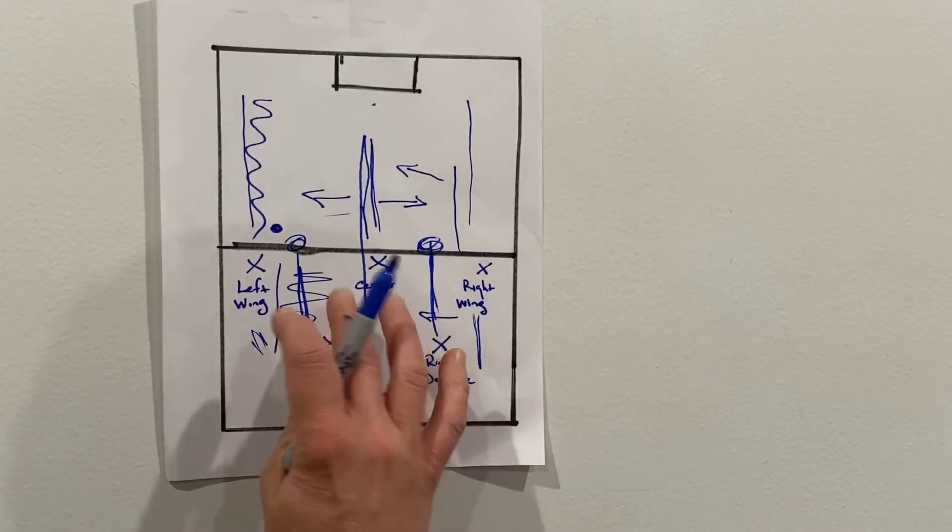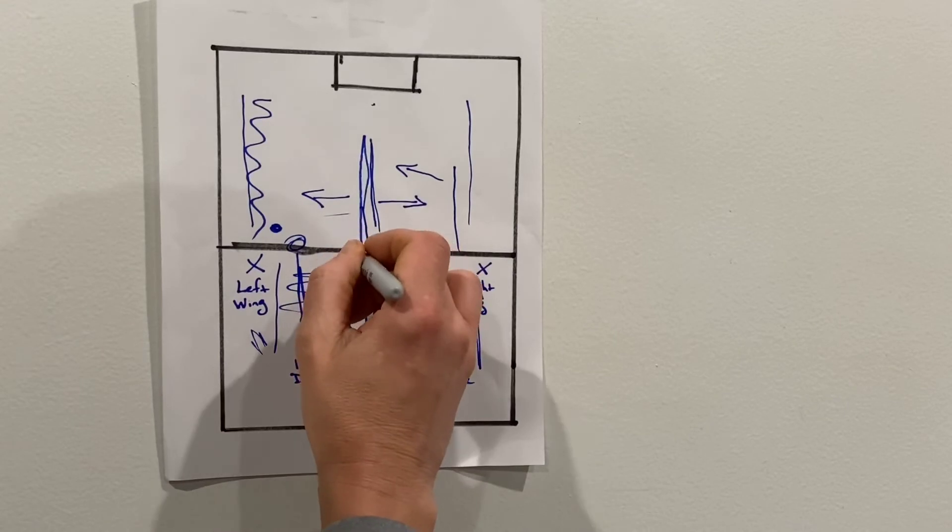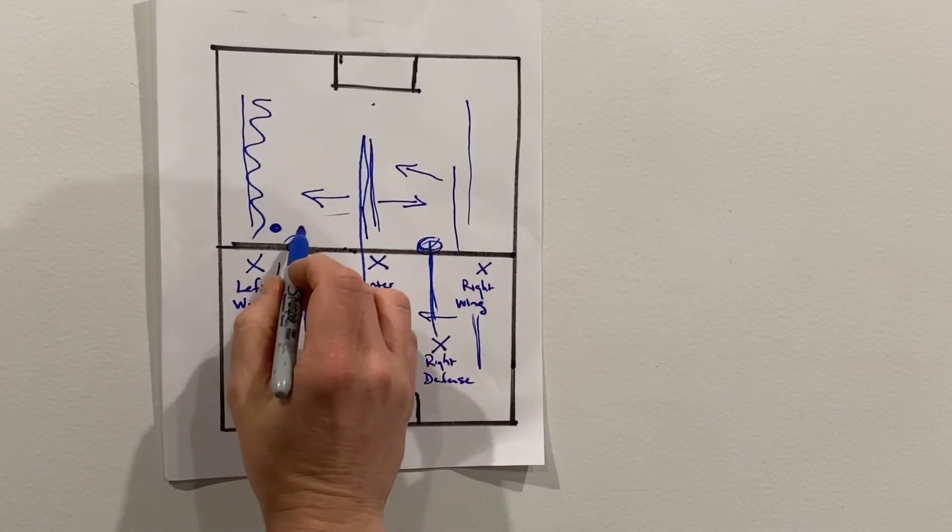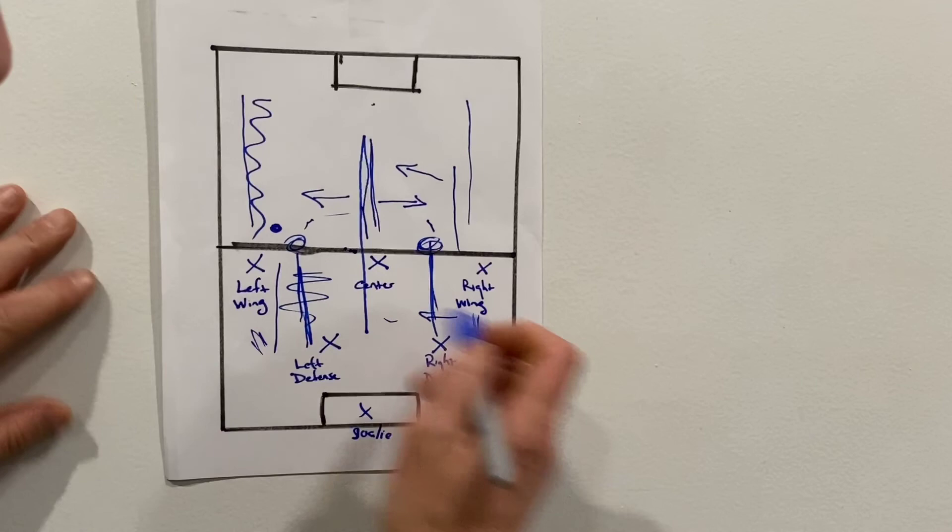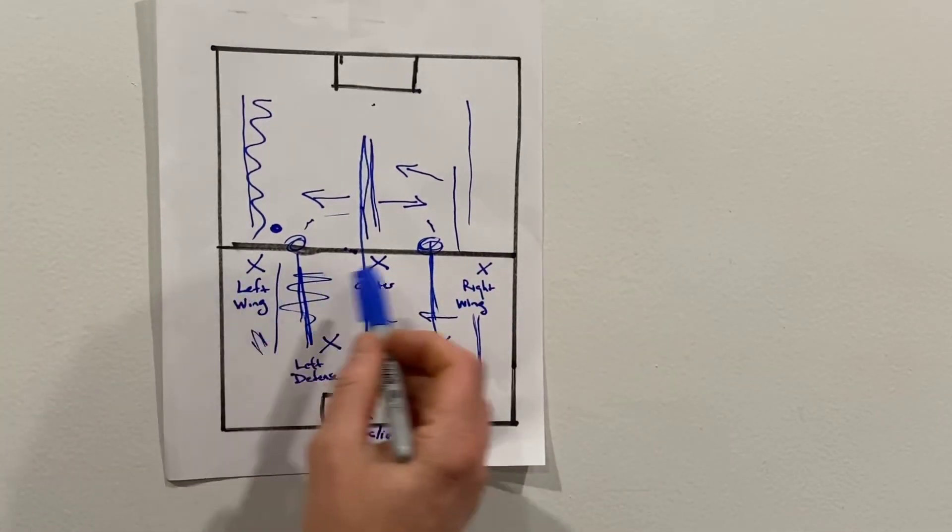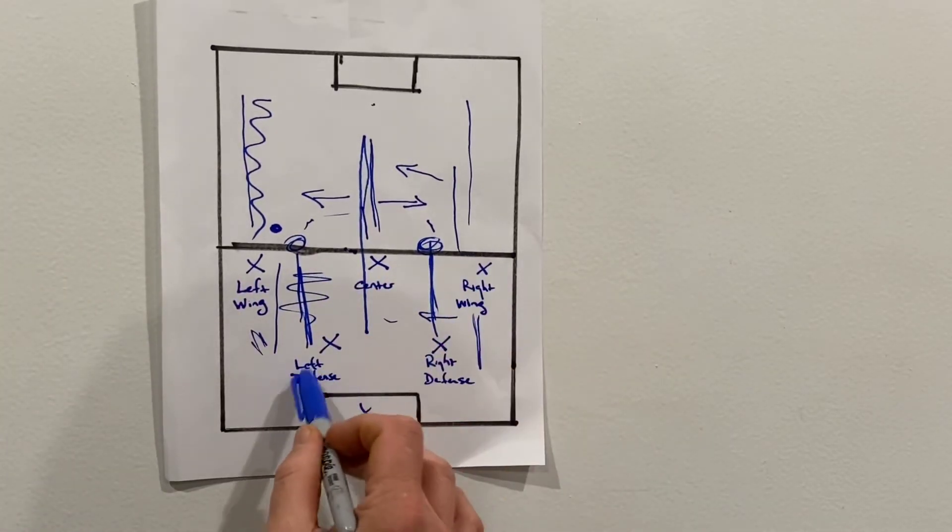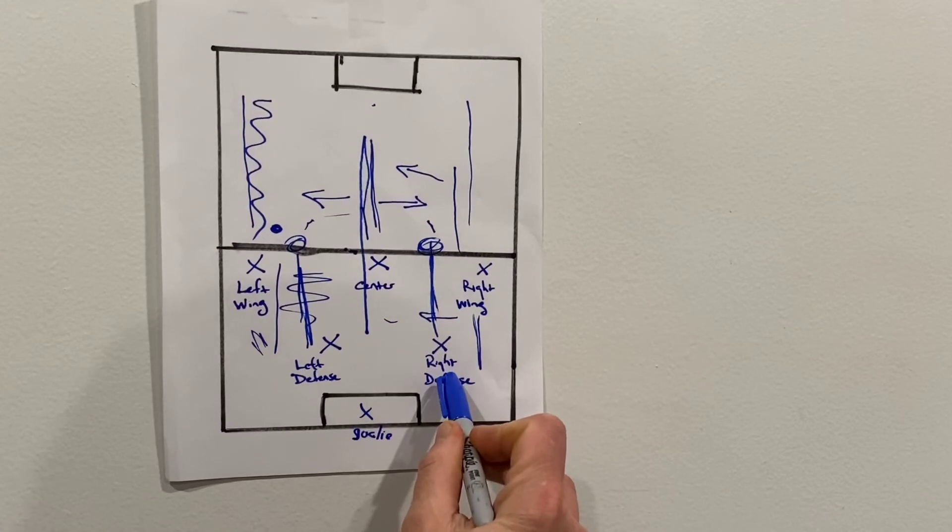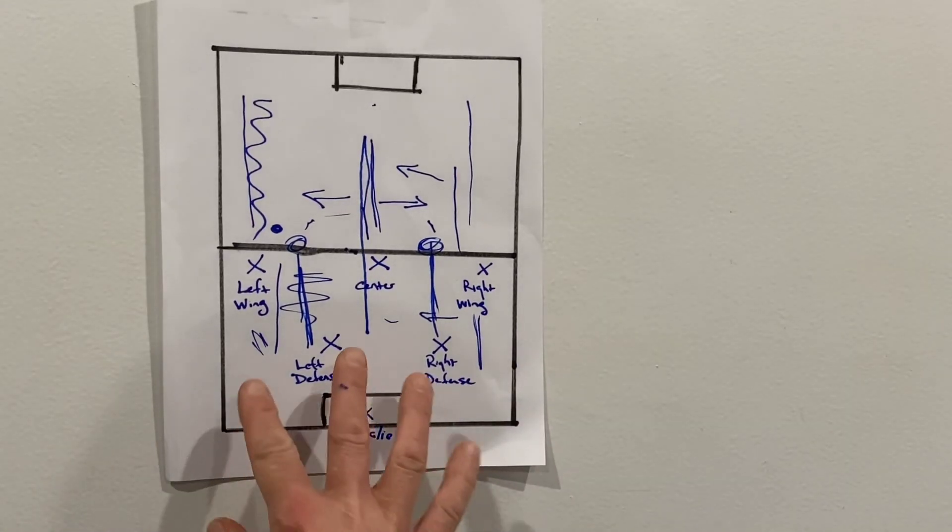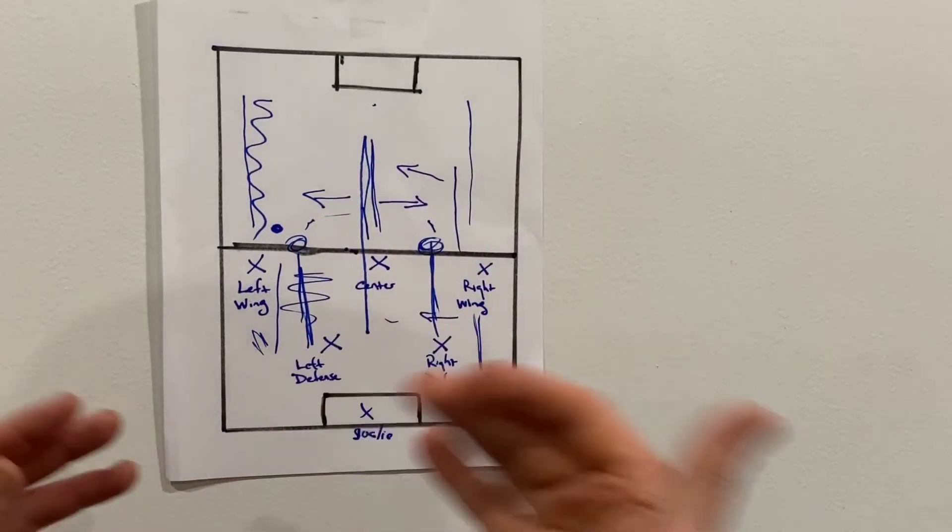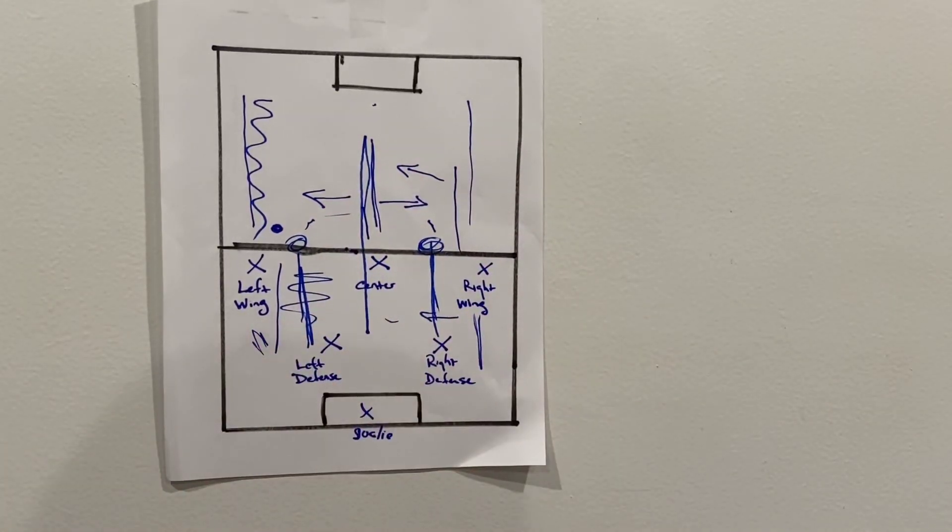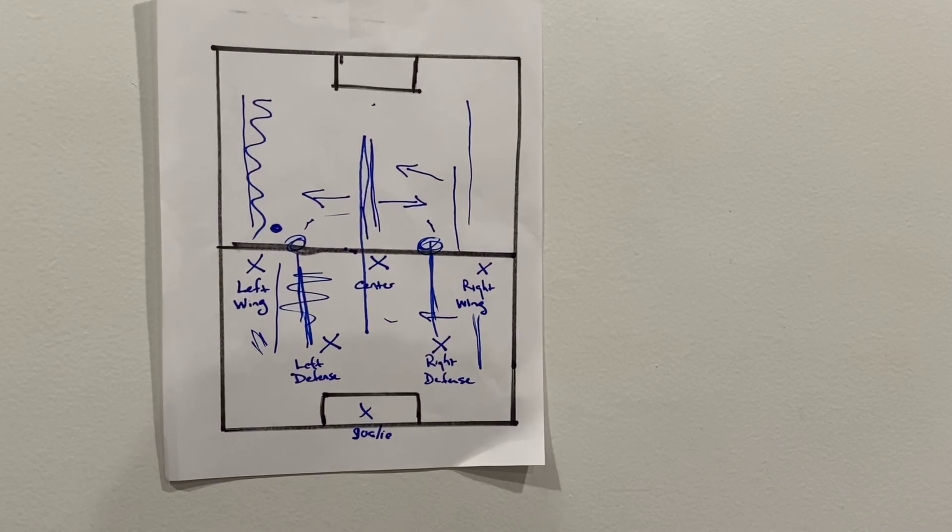Now guys, you don't have to stand on the line. You can move up a couple feet. So this is just to better explain the field, the positions: left wing, center, right wing, left defense, right defense, and then just explaining the lanes. And this is going to help our team spread out and give more opportunities to pass the ball to one another.